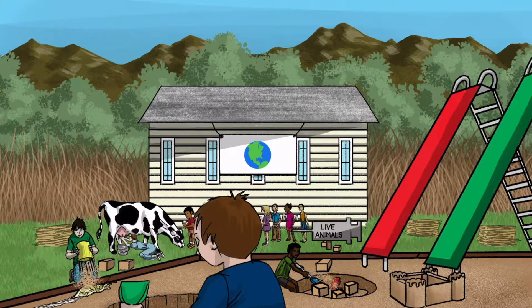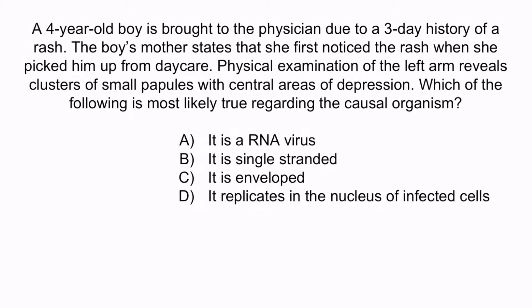Going back to the image, there are no naked people shown, so you can assume the virus is enveloped. Remember, if there are naked people in the image, the virus is non-enveloped or naked; if there are no naked people, the virus is enveloped. So poxvirus, including molluscum contagiosum, is an enveloped virus. Answer A is wrong because poxviruses are DNA viruses. They are double-stranded, so B is also wrong. Finally, they replicate in the cytoplasm of infected cells, not the nucleus, so D is wrong. The correct answer is C: it is enveloped.